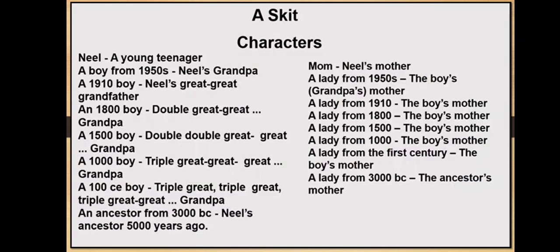The characters include a 1910 boy, a lady from 1910, an 1800 boy, a lady from 1800, a 1500 boy, a lady from 1500, a 1000 CE boy, and a lady from the first century. The 1910 boy was Neil's great-great-grandfather, the 1800 boy was Neil's double great-great-grandfather, and the 1500 boy was also a double great-great-grandfather.